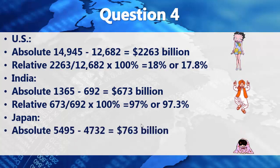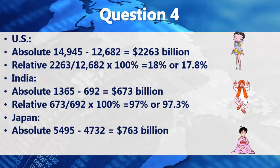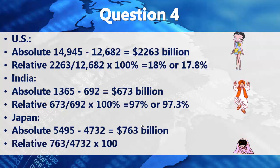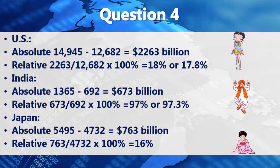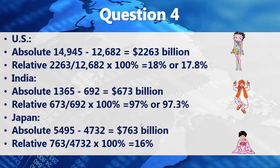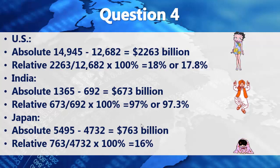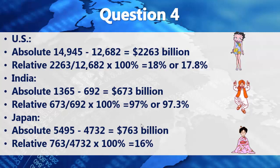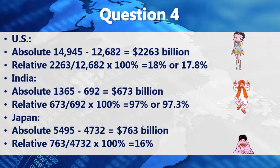For Japan, the absolute change was $763 billion. Dividing $763 billion by the original $4,732 billion and multiplying by 100 gives about 16%.